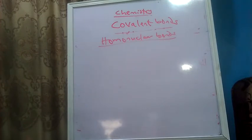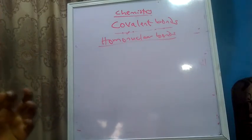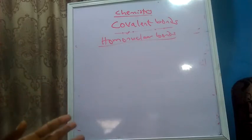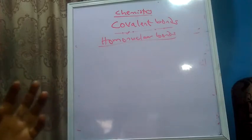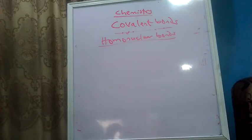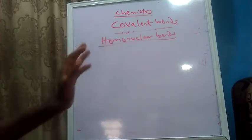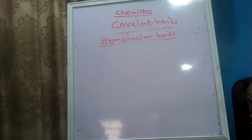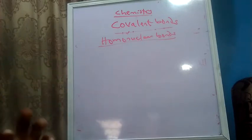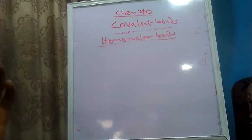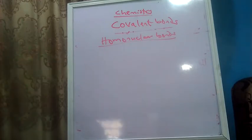Homonuclear covalent bonds are bonds that are formed between two or more of the same atom, while heteronuclear bonds are covalent bonds that are formed between two or more different atoms. In this video we'll look at homonuclear covalent bonds first. I'm going to take a very typical example to see how the sharing would exist. Remember our Lewis dot structures — the valence electrons written as dots around the atomic symbols — that is going to serve in this video.